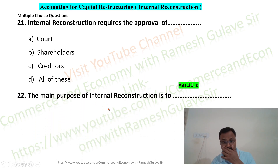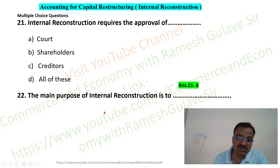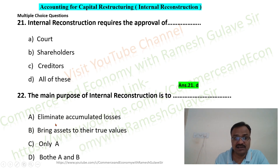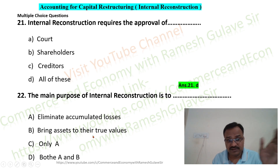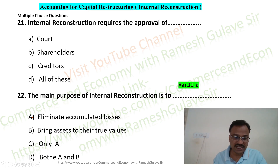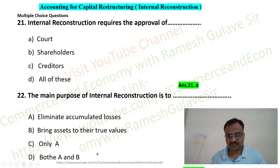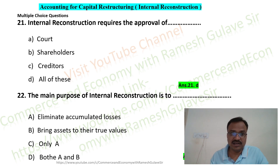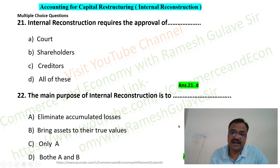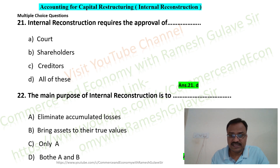The final question asks again about the main purpose of internal reconstruction. Along with eliminating accumulated losses, internal reconstruction also aims to bring assets to their true values. So both options A and B are correct — option D is the right answer. This concludes the important multiple choice questions on accounting for capital restructuring and internal reconstruction. Please share the video with friends and subscribe to the channel for new updates.